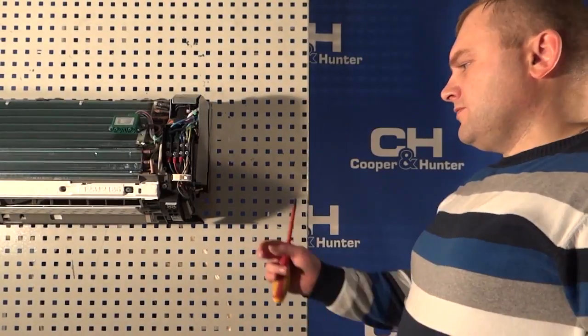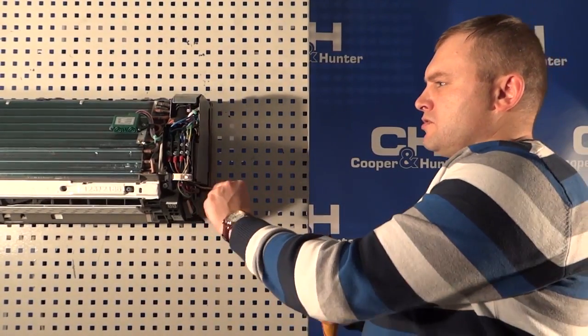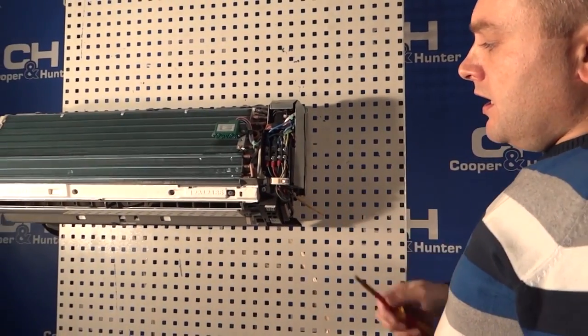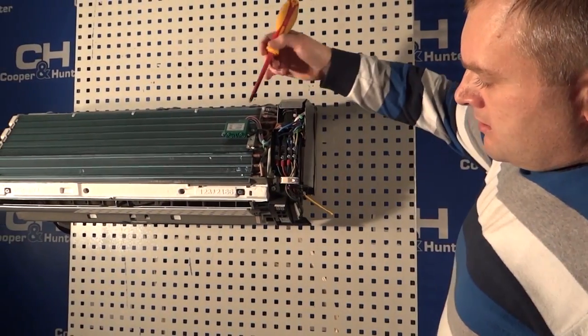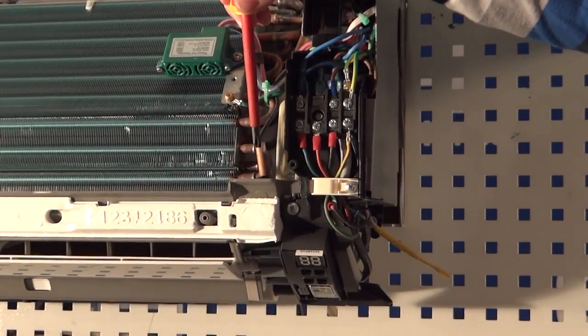Error code F1 is responsible for the air temperature sensor near the indoor unit as well as the input air temperature. Error code F2 is responsible for the pipe sensor which is located on the evaporator of the indoor unit.